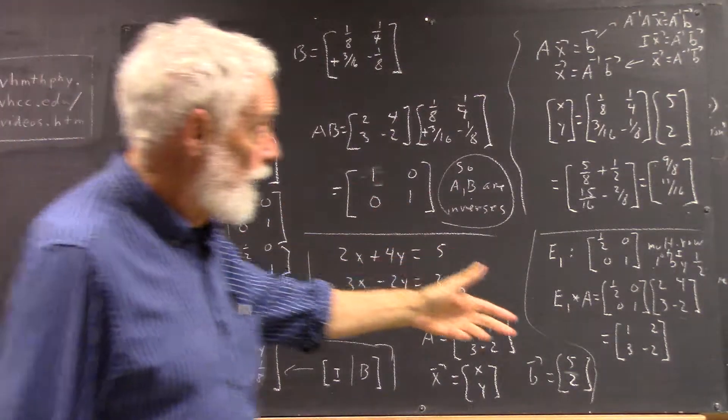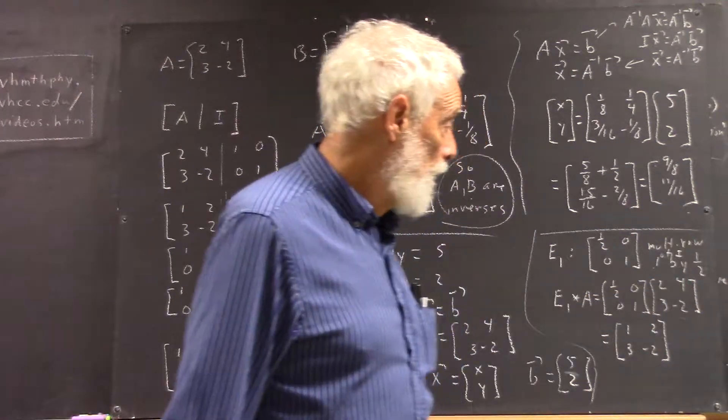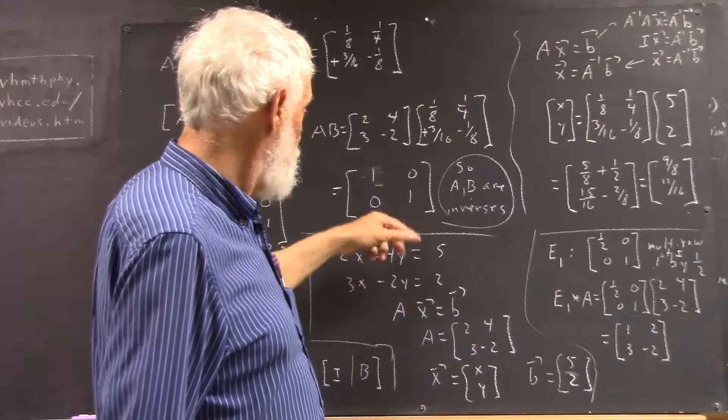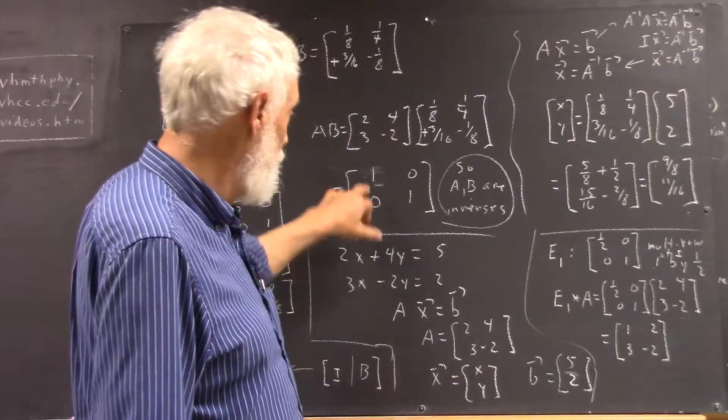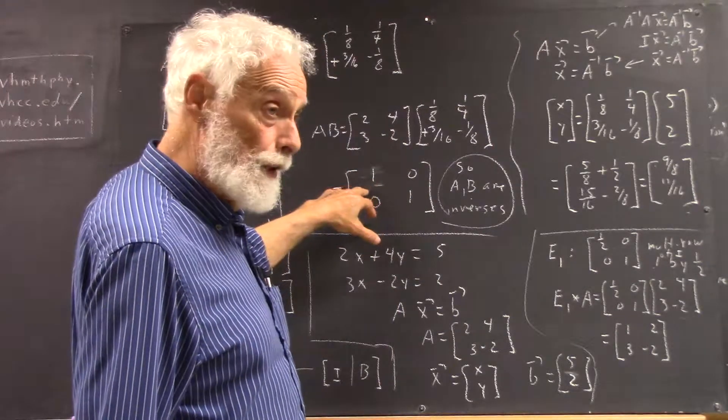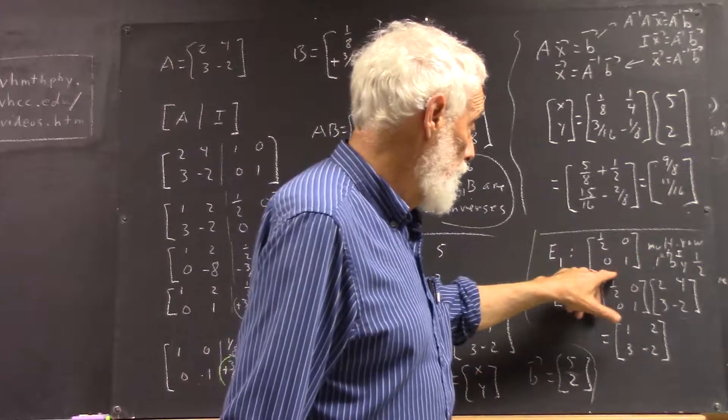We're going to multiply the first row of the identity by one-half. Now, the identity is this. We multiply the first row by one-half. We don't really have to write out the calculation, do we? We get one-half zero. So we have that. Second row is undisturbed.